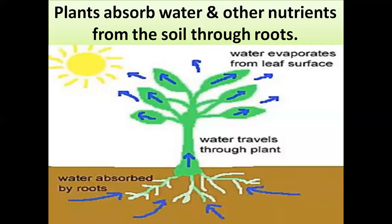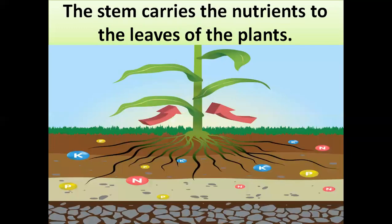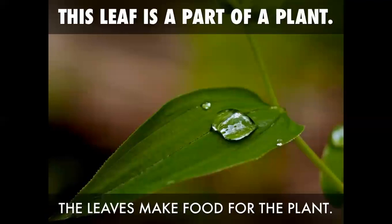Plants absorb water and other nutrients from the soil through their roots. The stem carries the nutrients to the leaves of the plant.